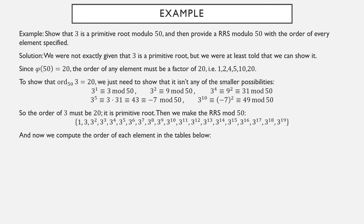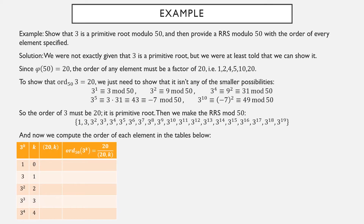Now we can compute the order of each element in this table. I'm going to go through every power of 3, identify what the exponent was, compute the GCD, then state: the order mod 50 of 3 to the k is the order of 3 divided by the GCD of the order of 3 and that exponent k. Going through one by one: if k is 0, the GCD is 20. If k is 1, the GCD is 1. Here the GCD is 2, then 1, and then 4. So dividing 20 by those gives us 1, 20, 10, 20, and 5.